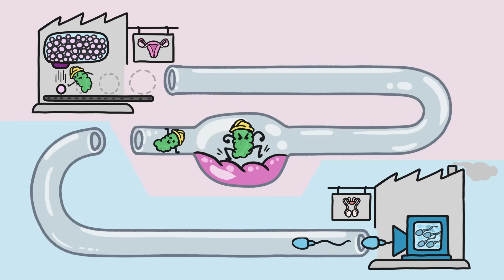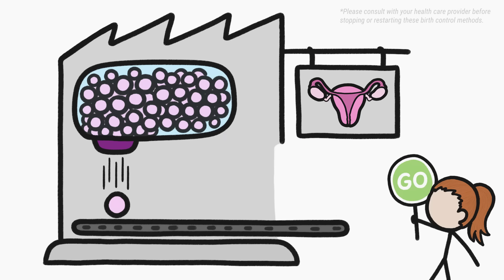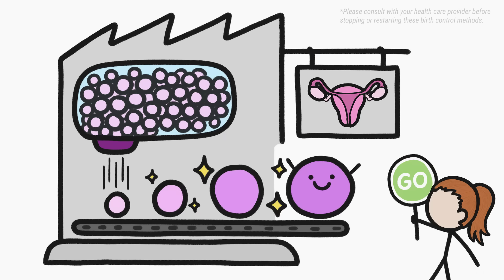And if you decide later on that you do want to get pregnant, you can just stop using these forms of birth control. The egg factory will generally start right back up.